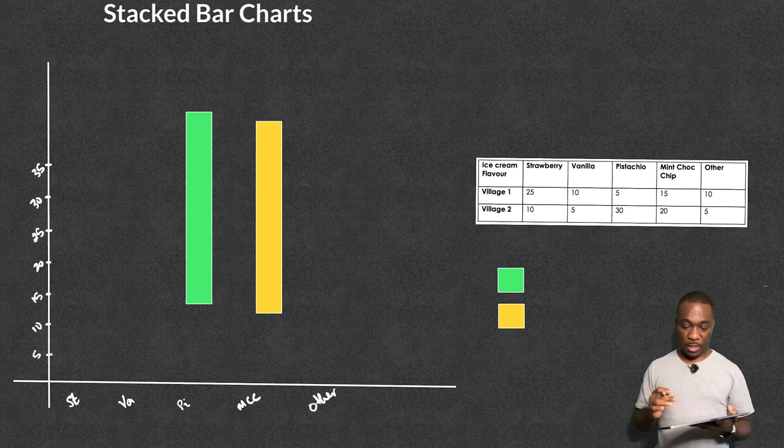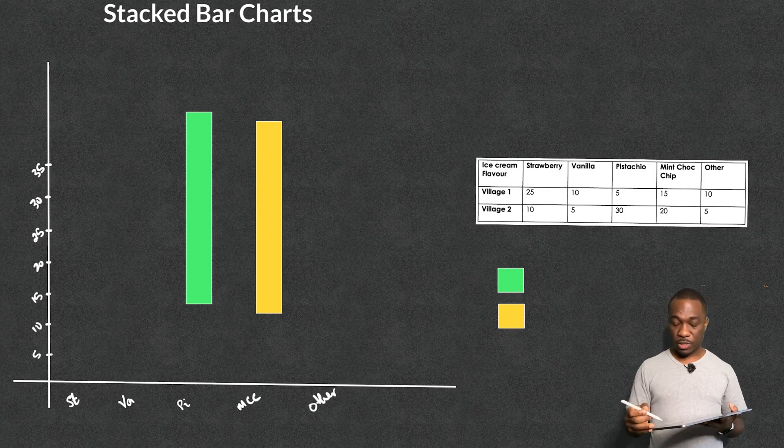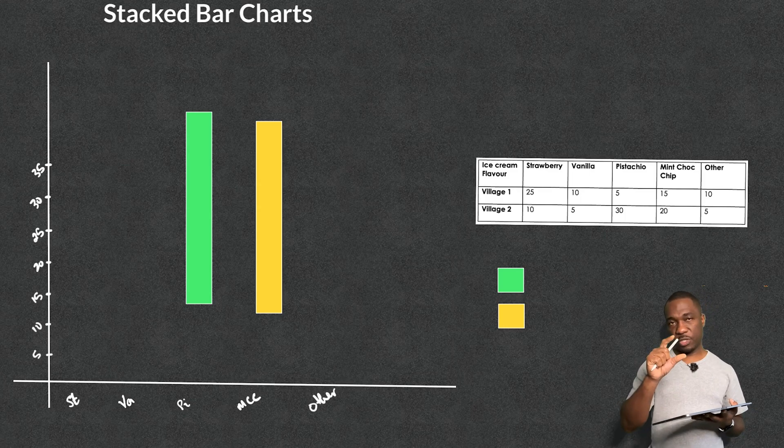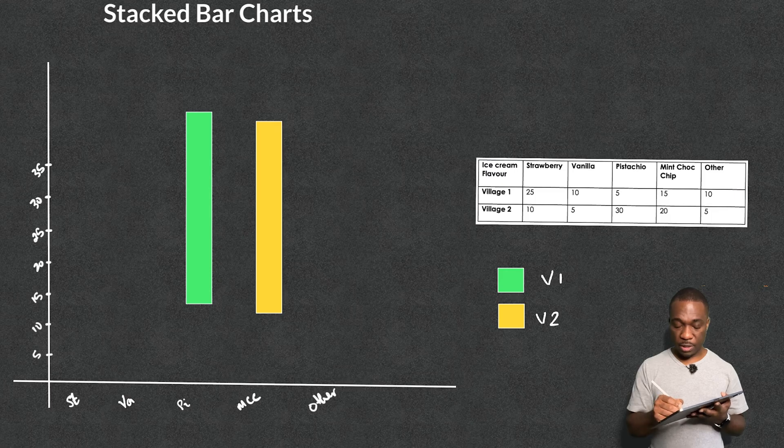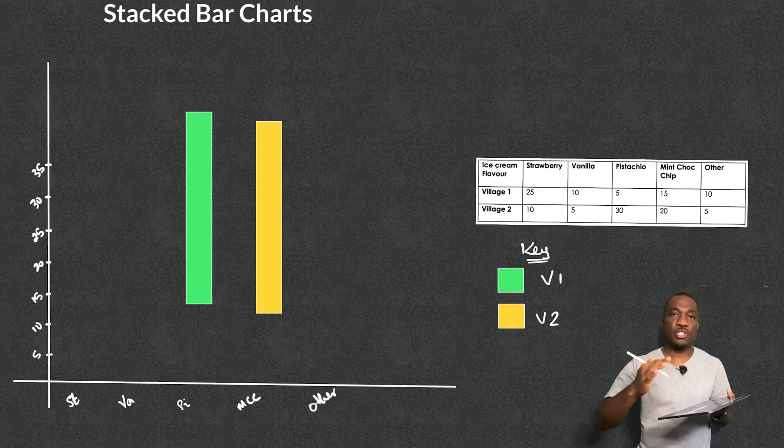So first of all, we're going to jump into what's going on here. Now because this is a stacked bar chart and I'm using two different colors, I will need to have a key of some sort. So I'm going to let the green be village 1 and the yellow be village 2. This is my key. When you're doing this for exams and things, make sure that you do write down a key for this.